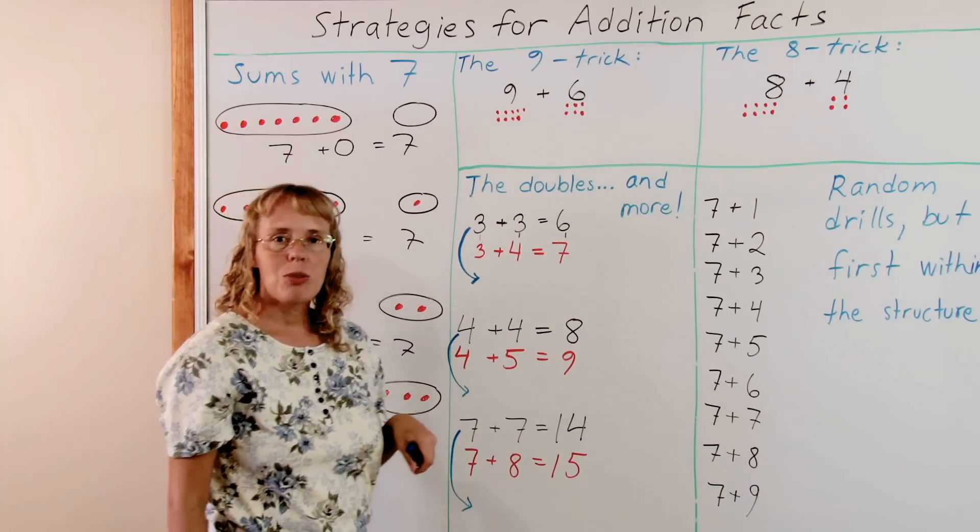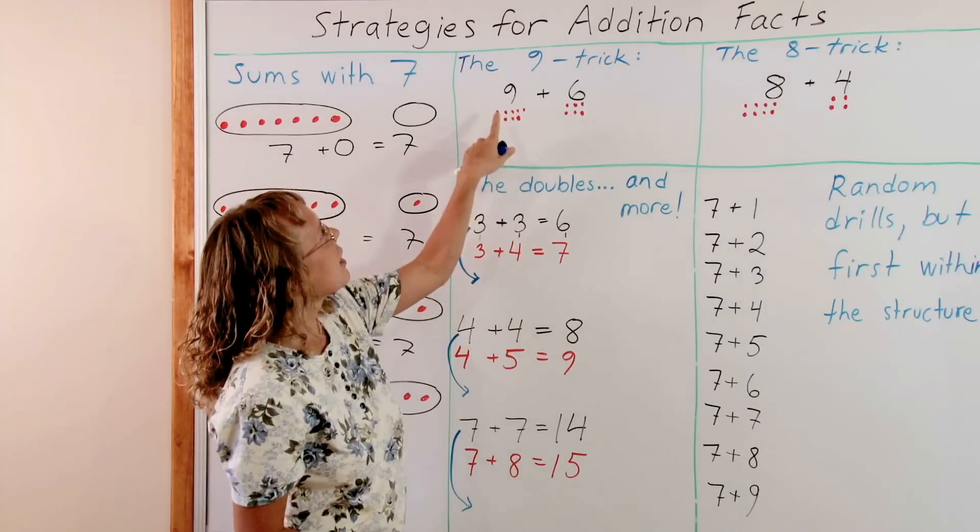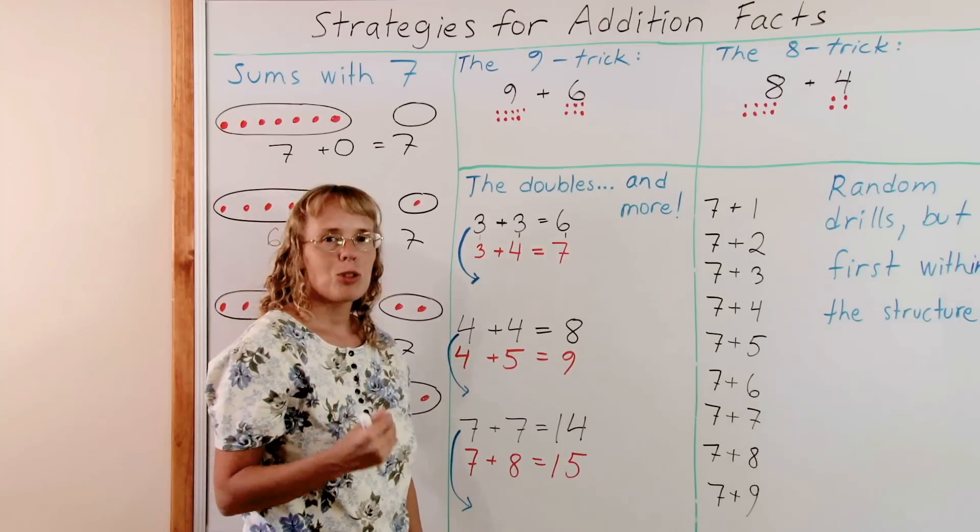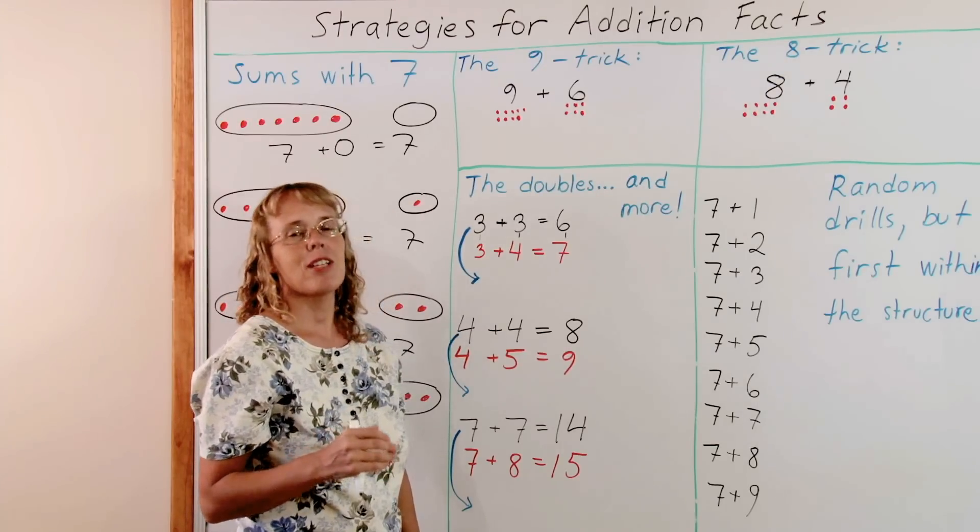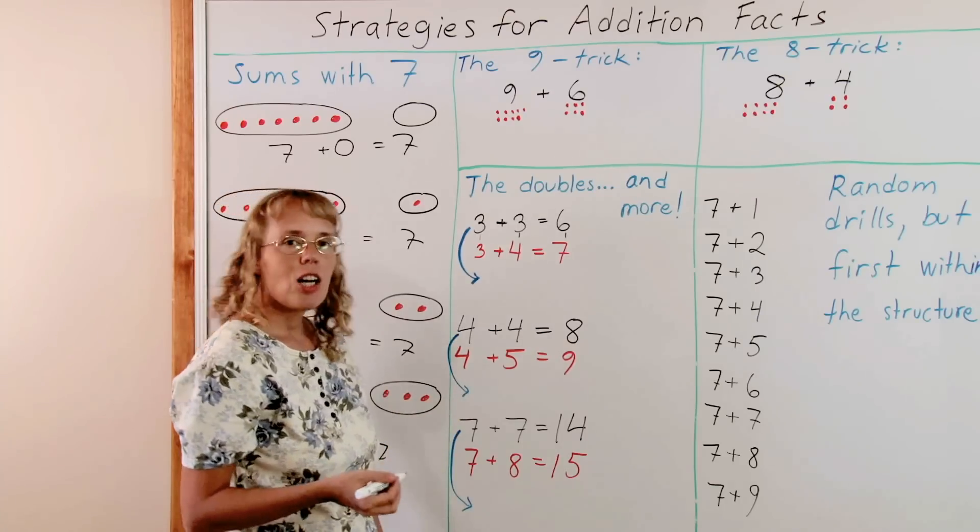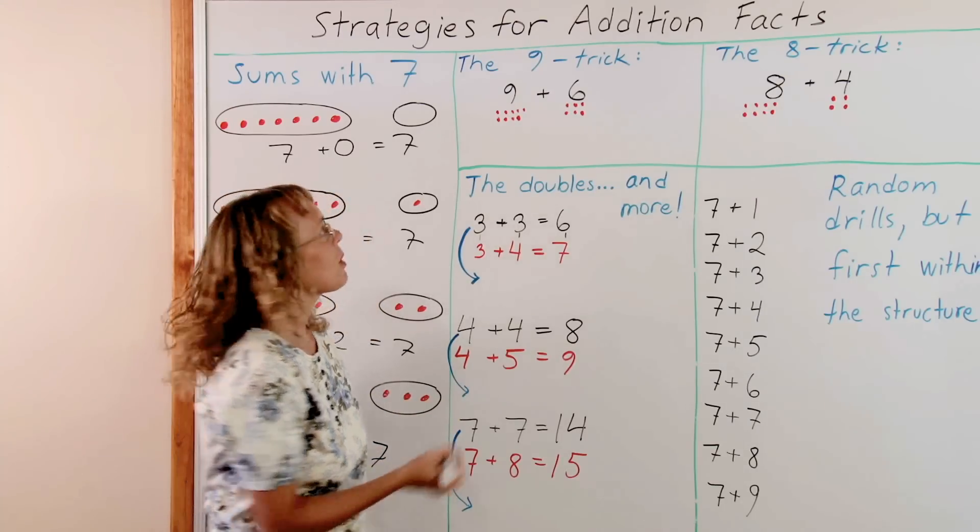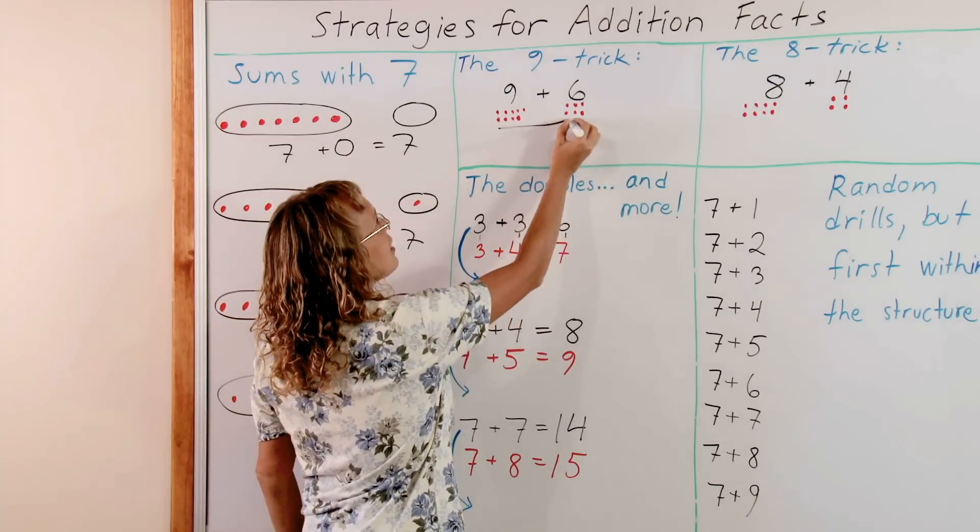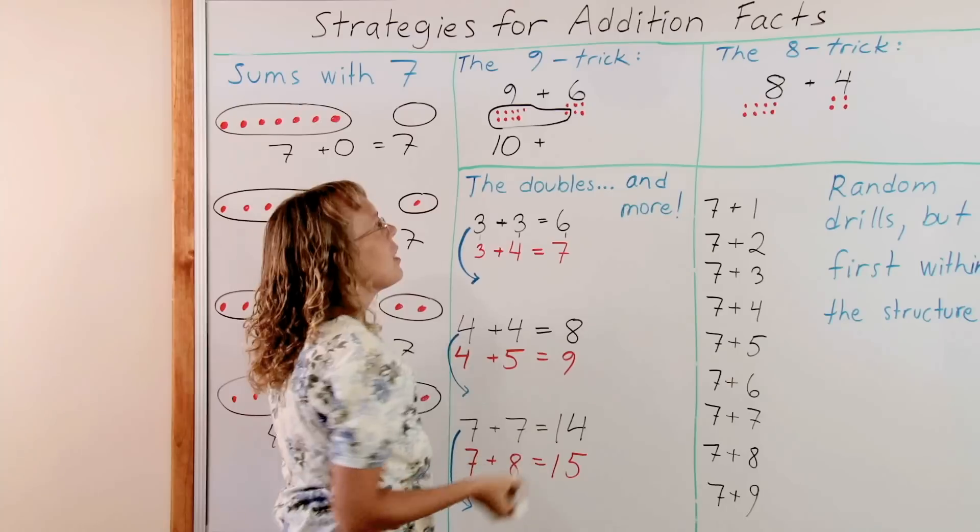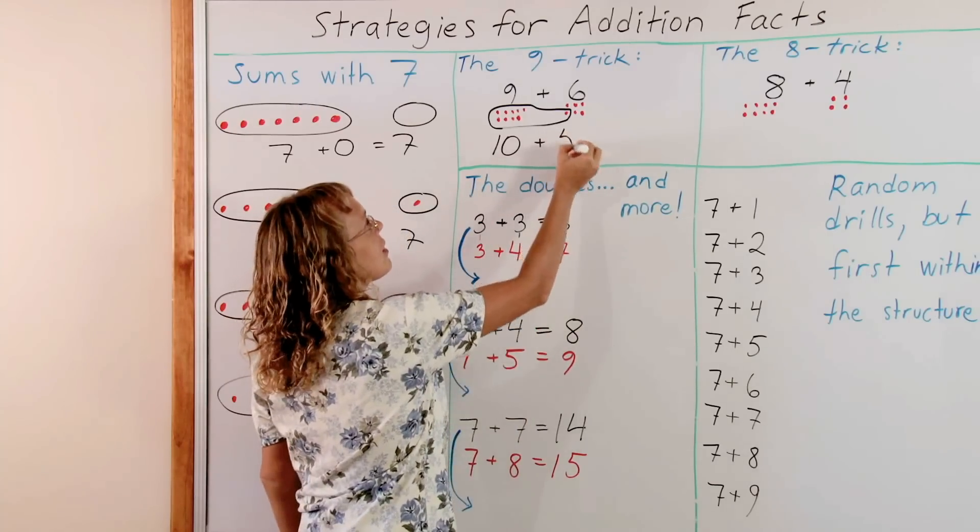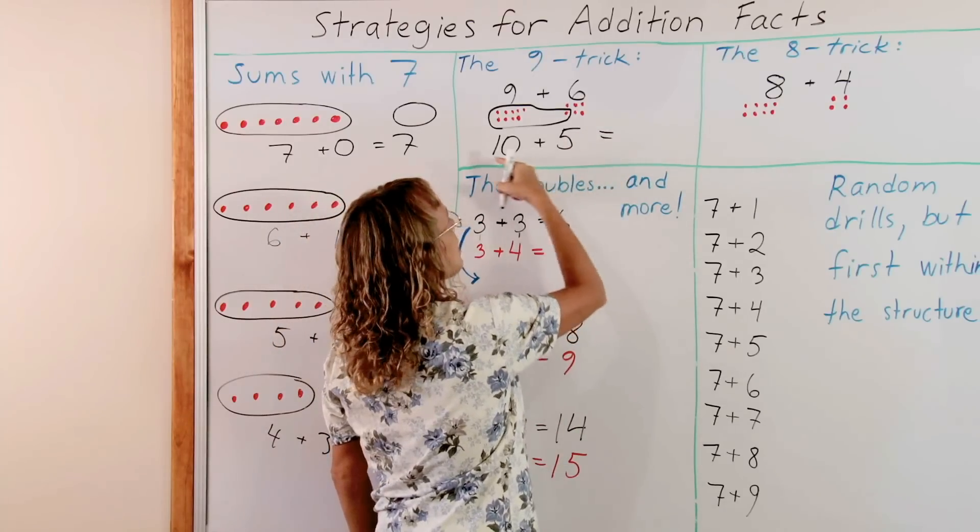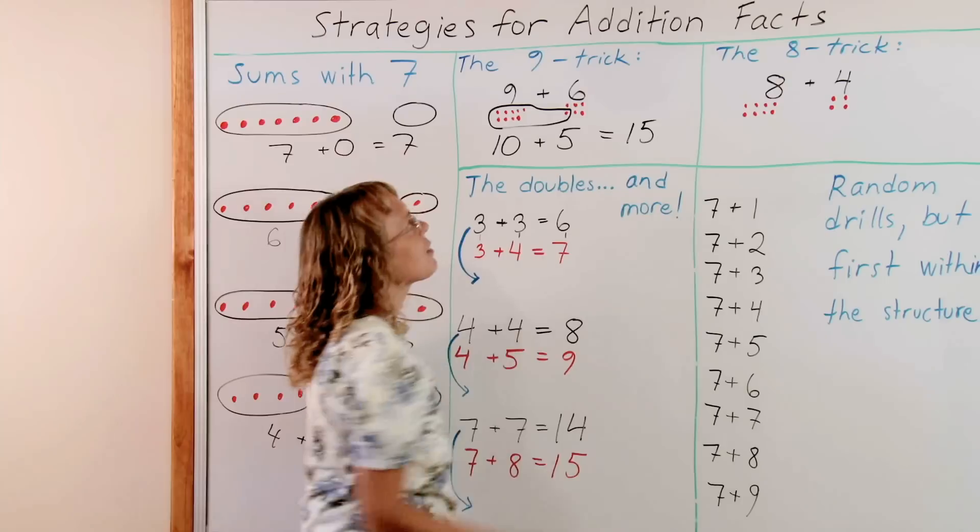Next I want to show you the famous 9 trick. Here it is. 9 plus some other number. Imagine that the 9 wants to be 10. It's not happy with itself. It wants to become a 10. So it's gonna go and steal or take 1 from the other number. Like this. 1 from the 6. And so 9 becomes 10, and now 6 only has 5 left. And then we add 10 plus 5 which is very easy to add. You just take 1 and 5 here and write them next to each other. 15.